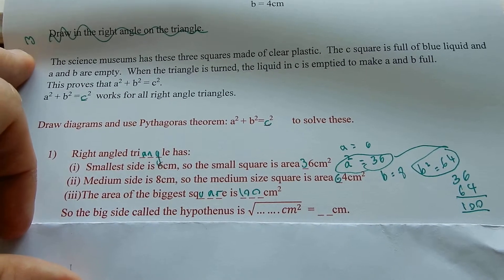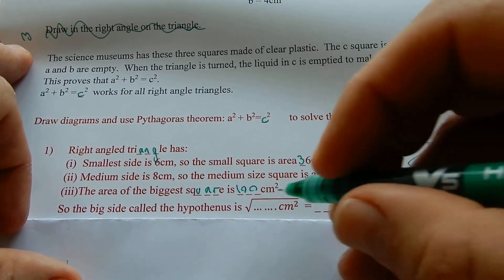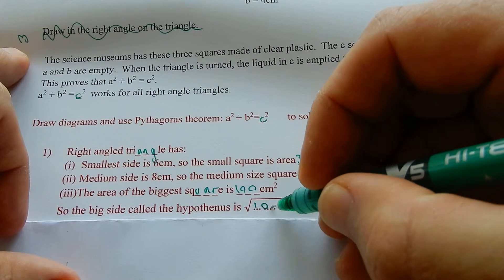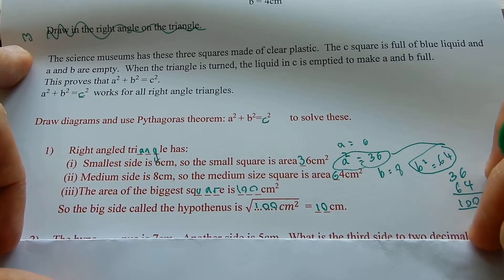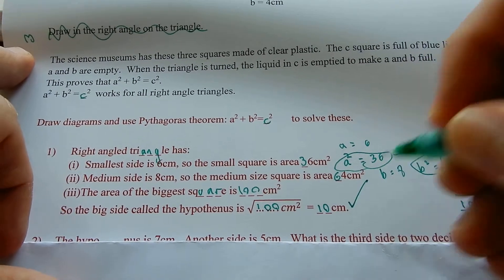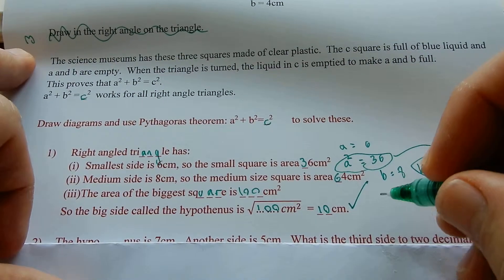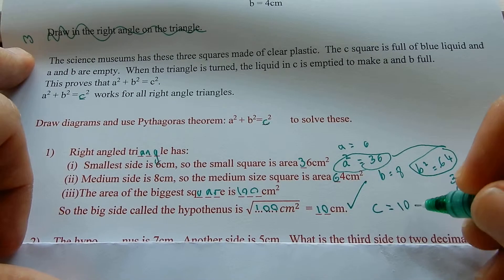So, now you know the area of the biggest one is, now you need to find out how long it is. So, you square root 100 centimeters squared. Square root 10 times 10 equals 100. So, yay! C equals 10 centimeters.